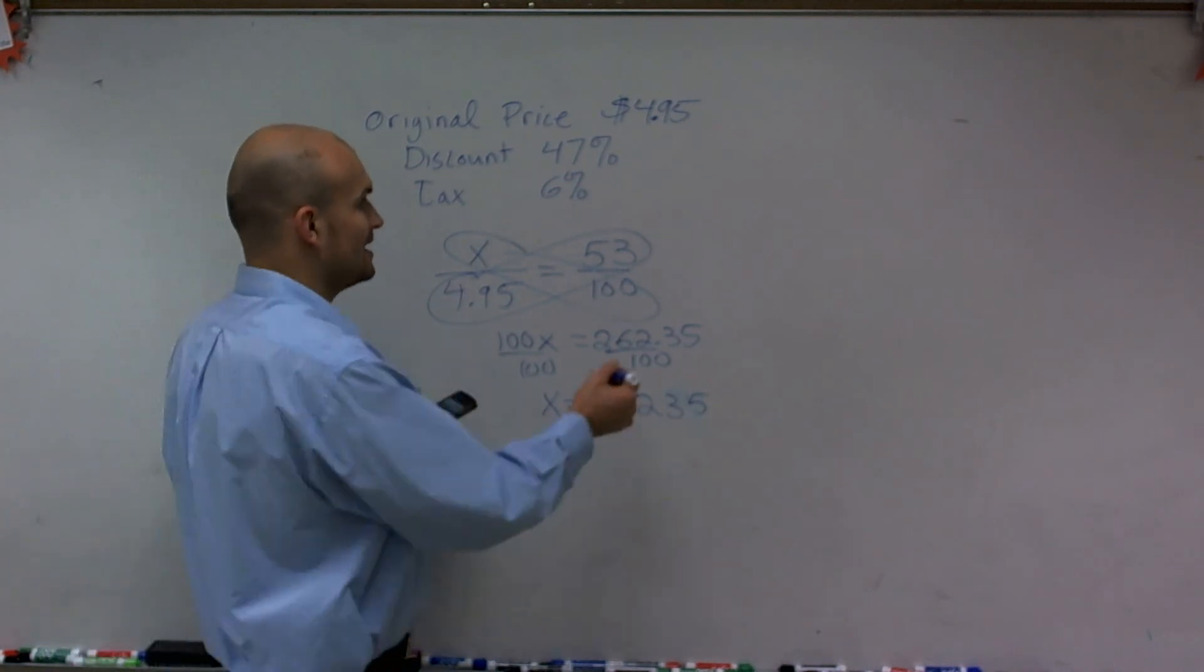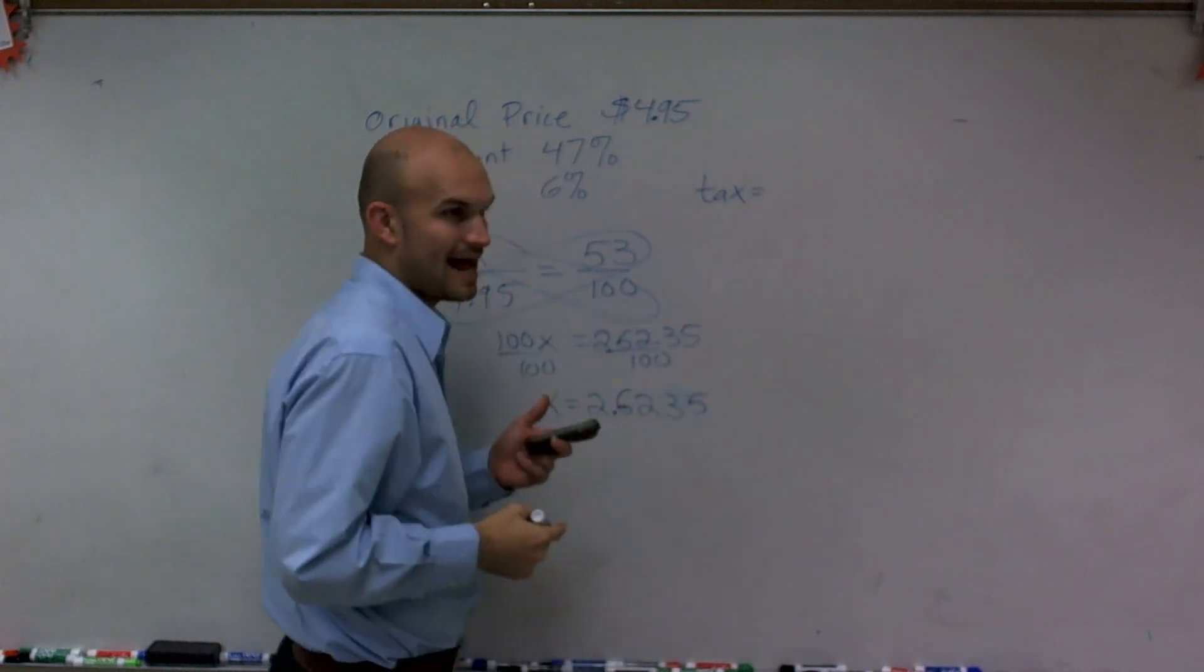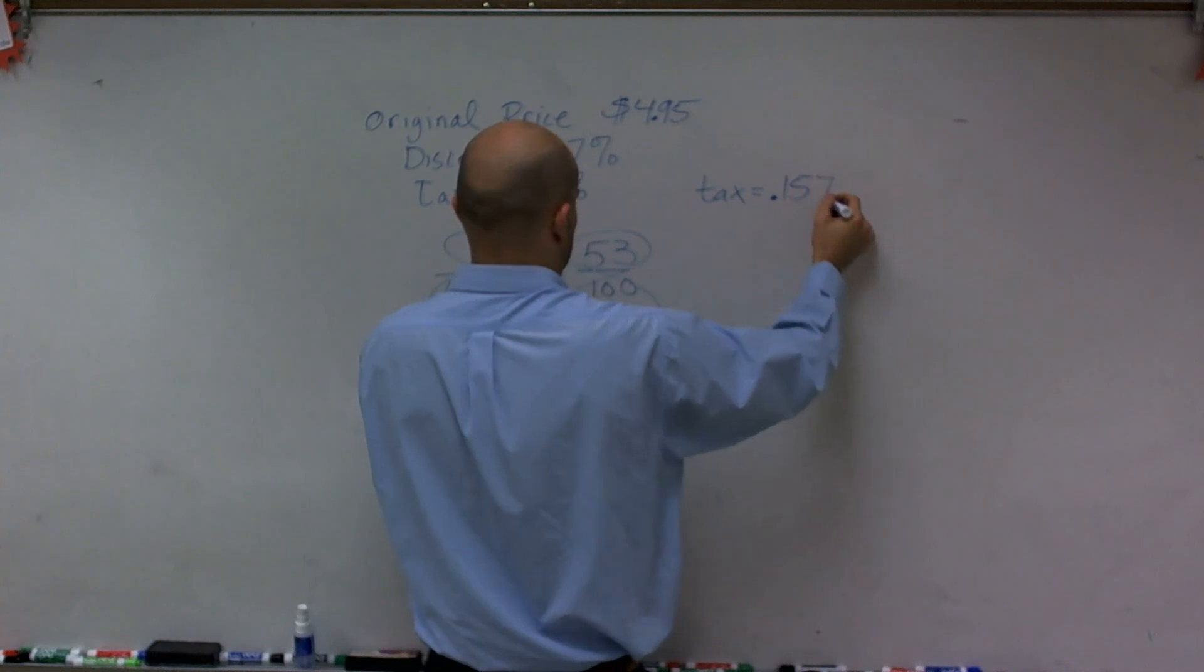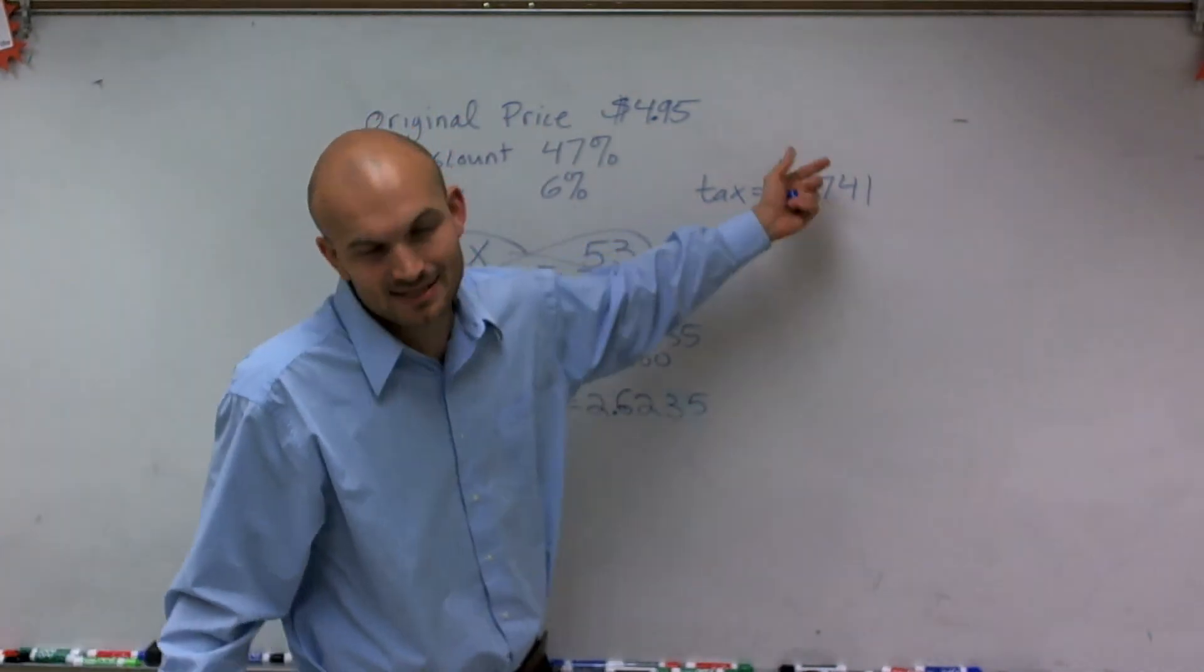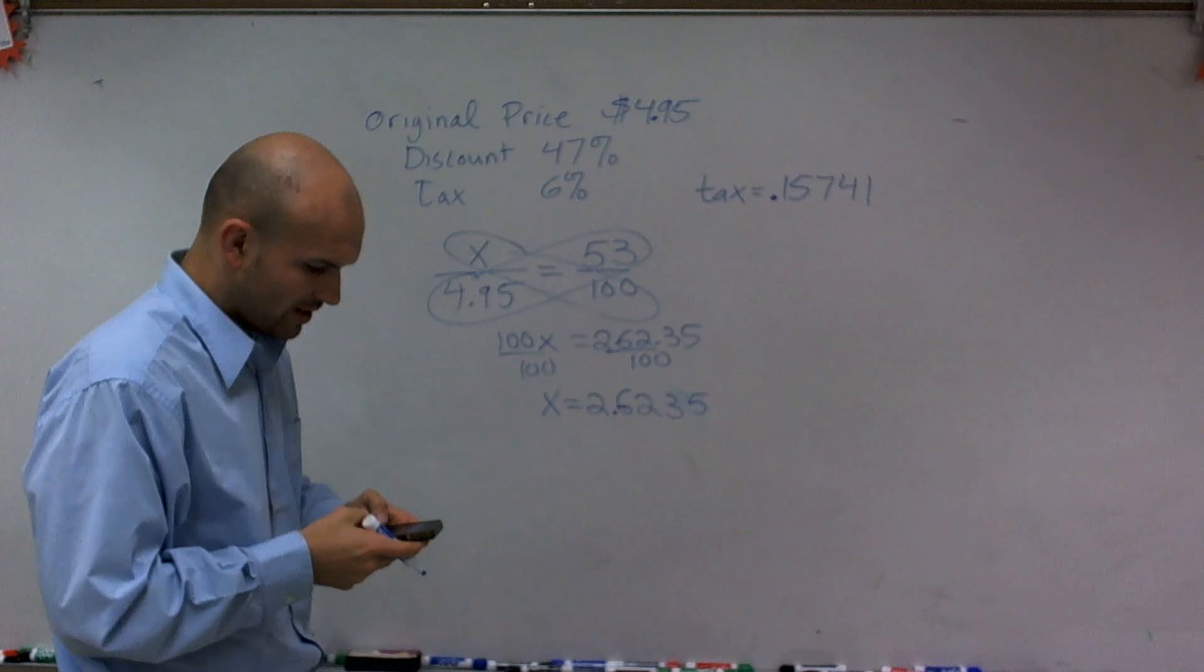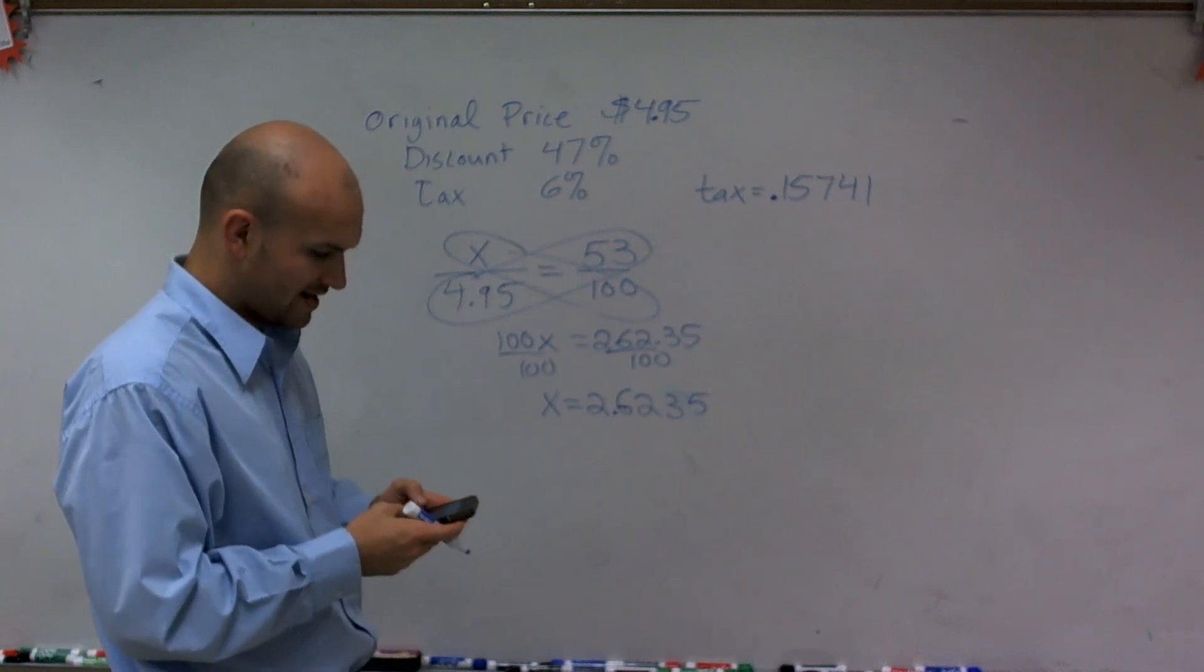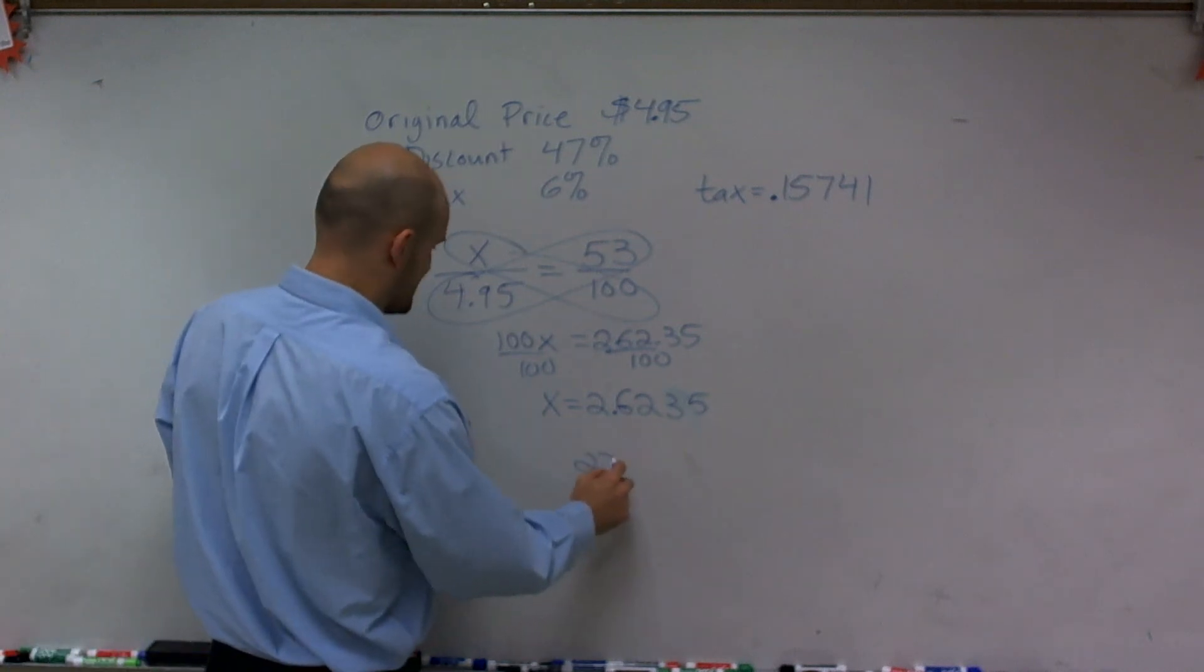When I do that, I get the tax - the amount we're going to add as tax is going to be $0.15. It's roughly $0.15, but we're going to carry those extra decimals because as I add the amount of tax onto my price of 2.6235, I get a final value of $2.78.